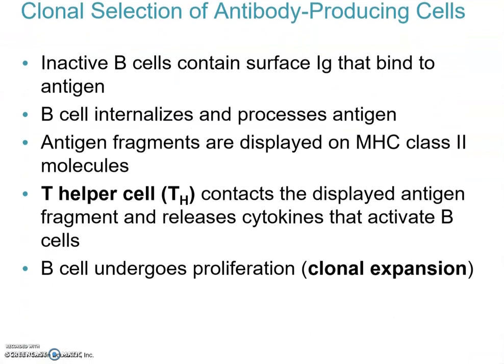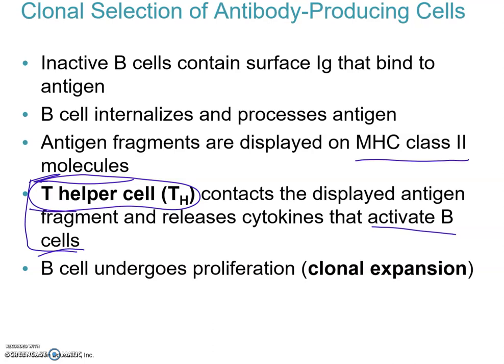Inactive B cells contain surface IgG that bind to the antigen. The B cell that internalizes and processes the antigen displays fragments on MHC class 2 molecules. The critical thing is that the helper T cell contacts the displayed antigen fragment and releases cytokines that activate B cells. Then the B cell undergoes proliferation or clonal expansion, which is the process by which we make a very specific antibody against the target.